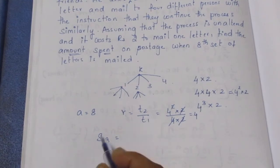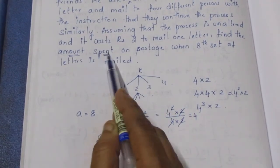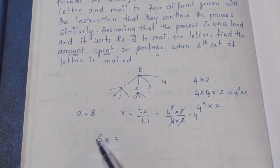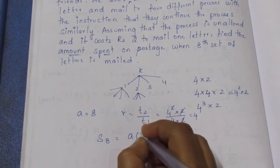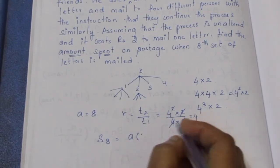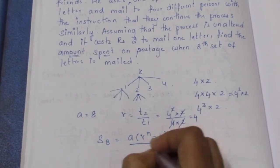S8 is sum of amount or total amount. S8 is sum. Formula A into R power n minus 1 by R minus 1.